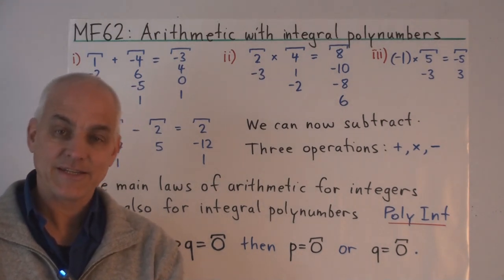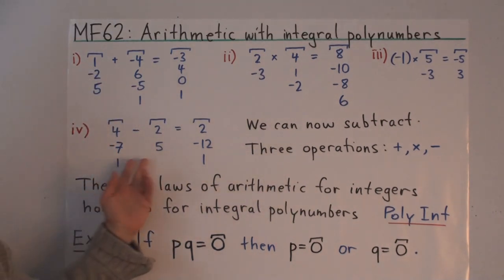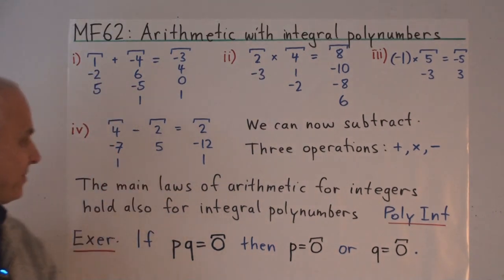And now one new operation that we can do, that we couldn't really do before, at least not consistently, is we can subtract one polynumber from another. So four minus seven one minus two five is two minus twelve one.